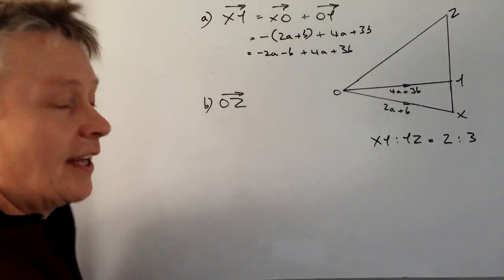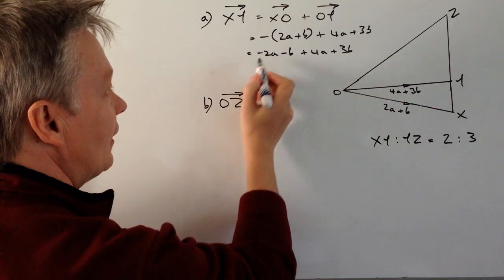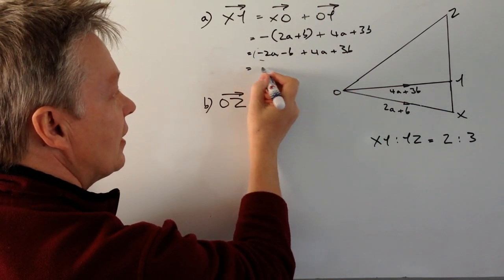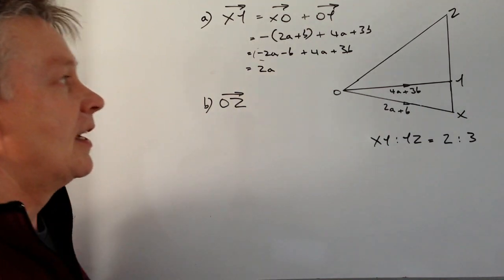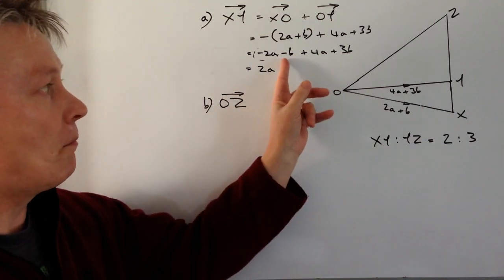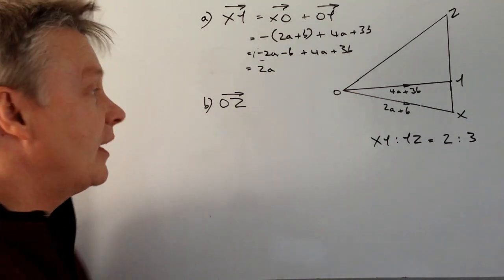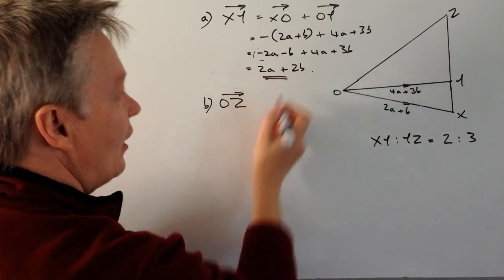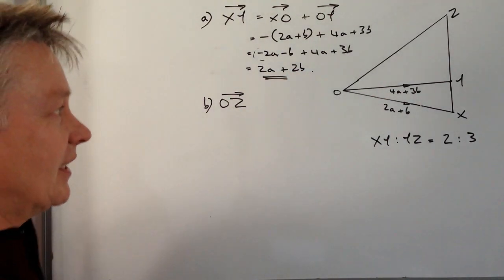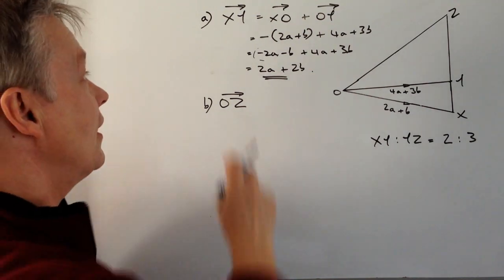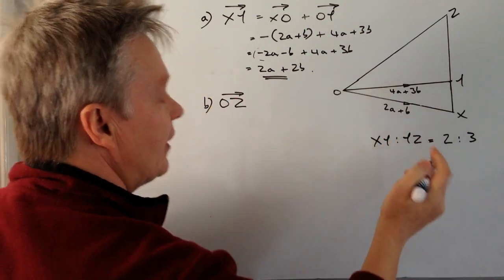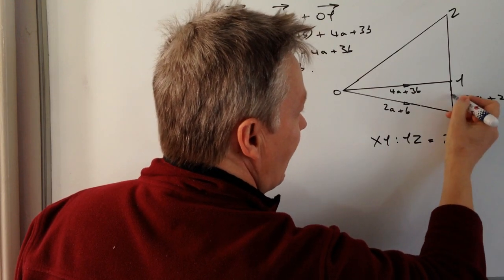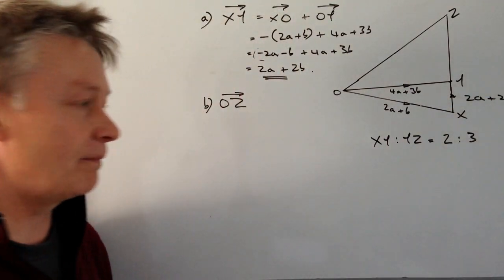Now I gather up the like terms: minus 2a + 4a gives positive 2a, and minus b + 3b gives plus 2b. So in this question, vector XY is going to be 2a + 2b, heading in that direction.